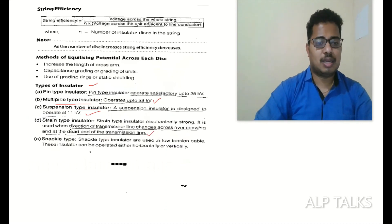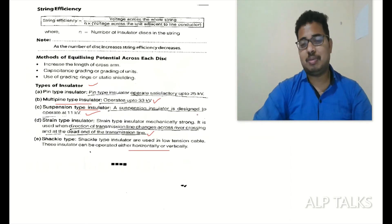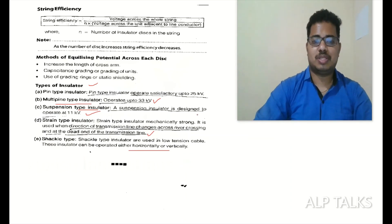Shackle type insulators are used in low tension cables. These insulators can be operated either horizontally or vertically. This is about supply system in power systems. This is a handbook.